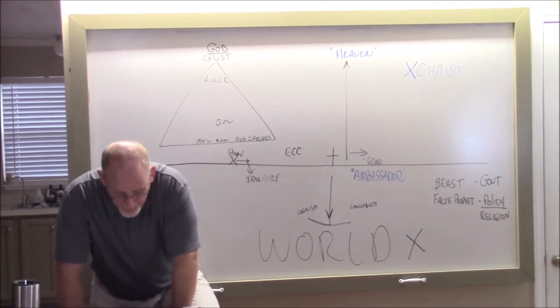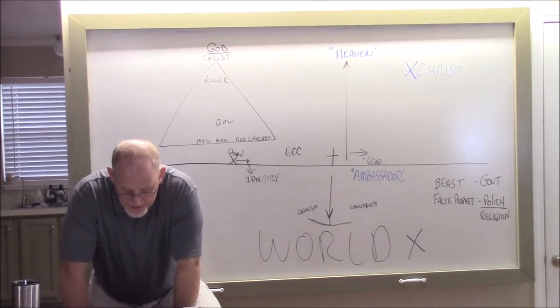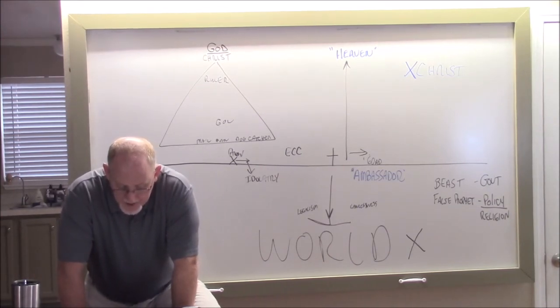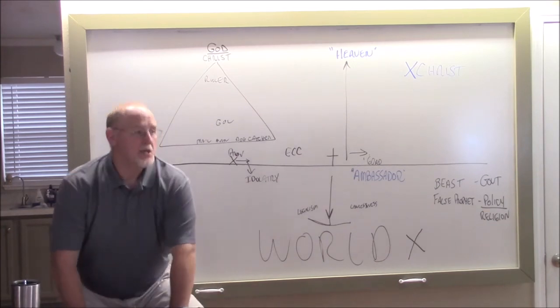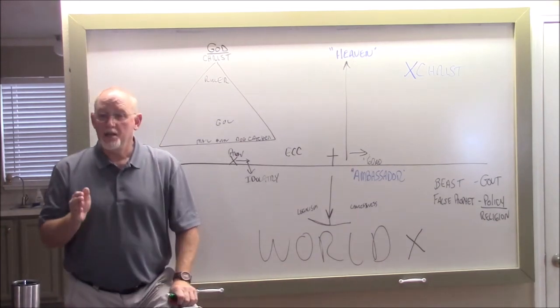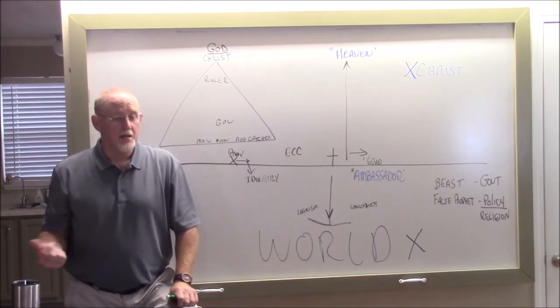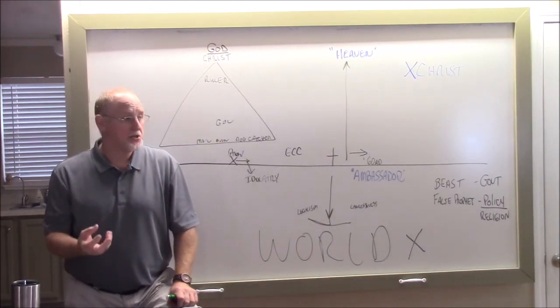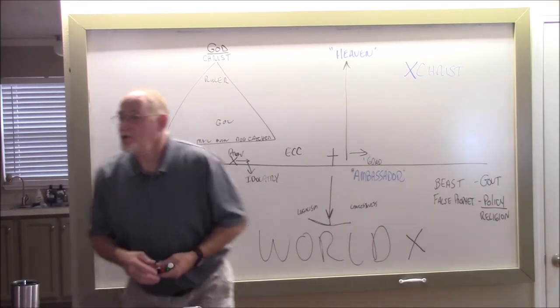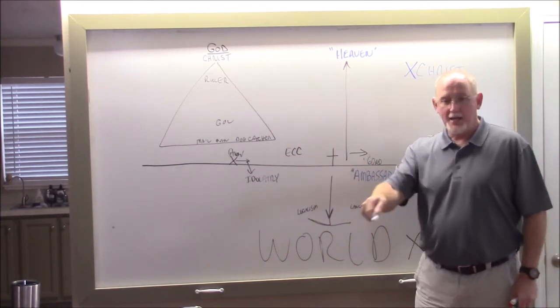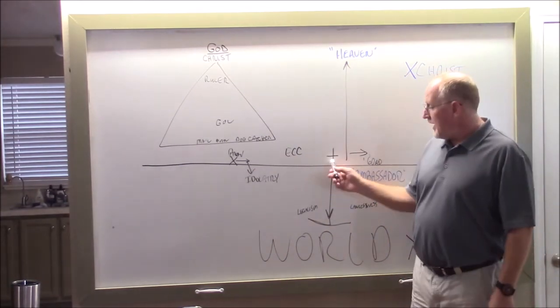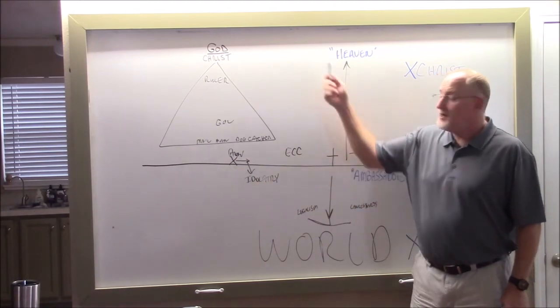Okay, now it says, verse 8, and Satan prevailed not, neither was there place found any more in heaven. The great dragon was cast out, that old serpent called the devil and Satan. Now being cast out of heaven, don't take these things literally. This is a book of symbolism. You remember Jesus said at the cross, now is the God of this world cast out. Jesus bound Satan at the cross by a certain ability, didn't he? What could Satan do before the cross? He could accuse anybody and everybody of breaking God's law, couldn't he? Was he right to say, sir?